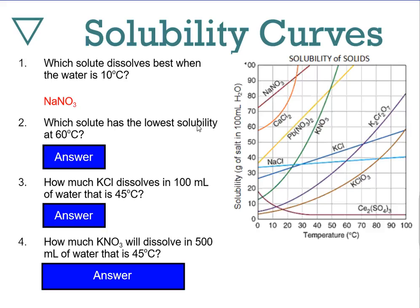Which solute has the lowest solubility at 60°C? That's cesium sulfate. This is an example of an ionic solid whose solubility decreases as temperature increases. The reason relates to the energy of the system — cesium sulfate releases energy when it dissolves. If you increase temperature, you put energy into the surroundings, making the salt less likely to dissolve. All the other salts listed tend to absorb energy when they dissolve.